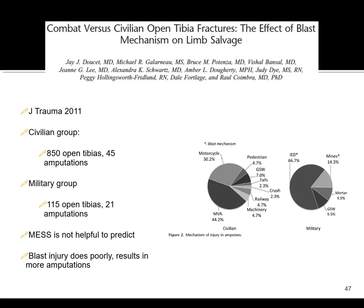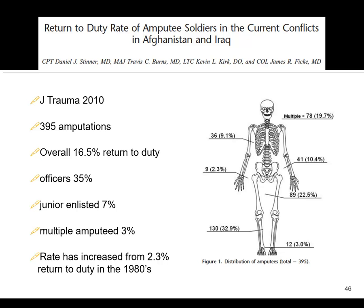A paper demonstrating the effect of blast mechanisms on limb salvage showed that blast injuries, improvised explosive devices, and mines were causing amputation in these patients. As much as we see injured soldiers get back to duty with amputations, it's difficult, as you would imagine. Many of these people are very motivated, very fit, and committed to getting back out there — these are the type of patients who actually do well with amputations. But overall in this paper, only about 16.5% returned to duty.